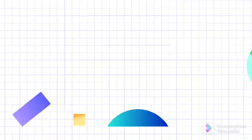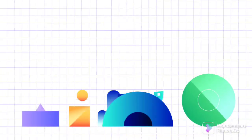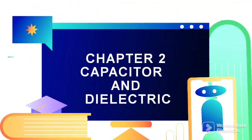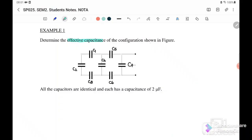Welcome to the channel. Today we are going to learn Chapter 2: Capacitor and Dielectric. Example 1: Determine the effective capacitance of the configuration if all the capacitances are identical and each has a capacitance of 2 microfarad.